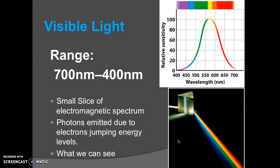Now visible light, this is the light that we can see from 700 nanometers on the red end to 400 nanometers on the blue end. We are able to see visual light because photons are emitted as electrons jump energy levels within different elements, and we'll talk about that a bit later.